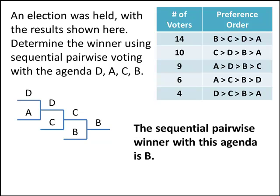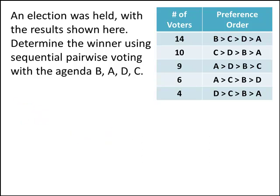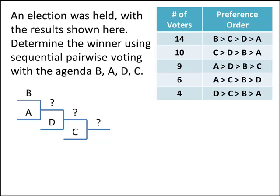What we'll sometimes find using sequential pairwise voting is that if we change the agenda, sometimes the winner can change also. So now let's use the agenda B, A, D, C, and see what happens. We can set up our matchups: the first matchup is B versus A, then that winner goes against D, and the winner of that matchup goes against C. The winner of that final matchup will be the winner of our election.